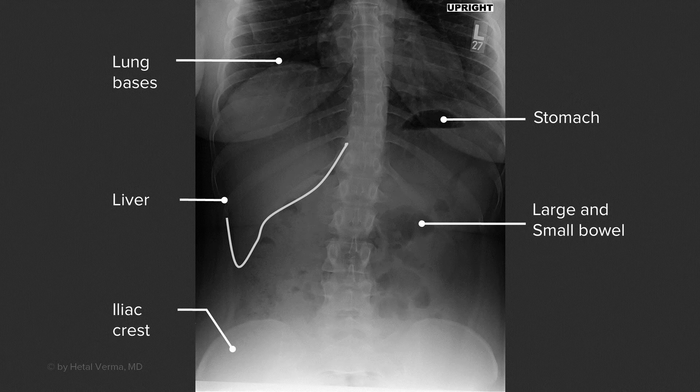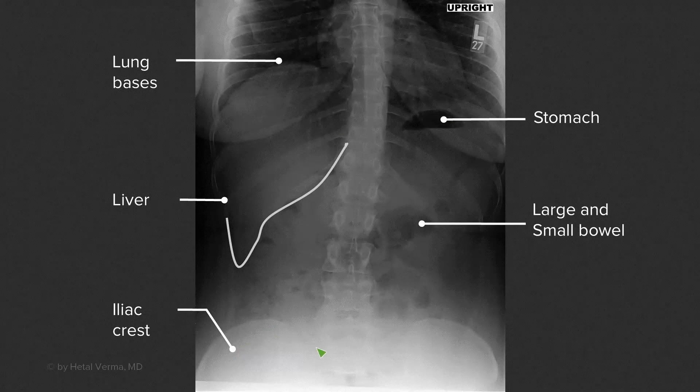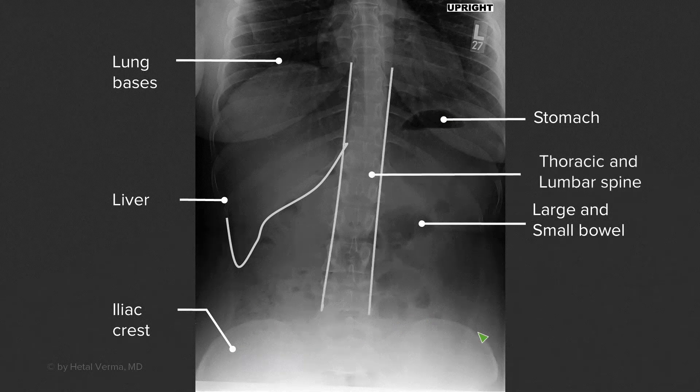In terms of bony structures, you can take a look at the iliac crests, which really should be included on every abdominal radiograph, and you can see the thoracic and lumbar spines.